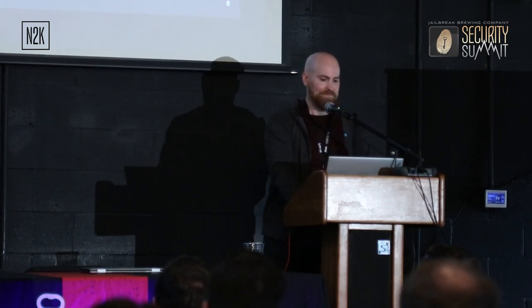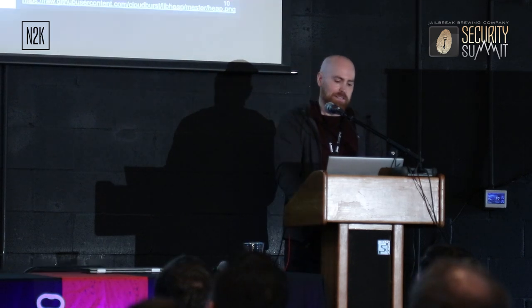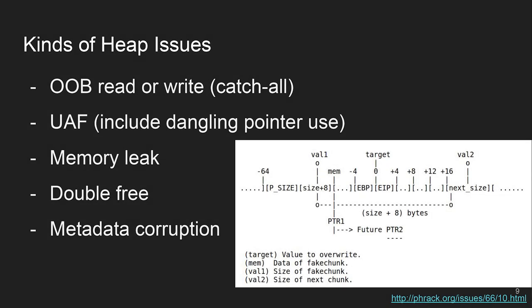It's not like, oh, I messed something up, but luckily the program crashed and I can see it and fix it. Usually it's like, something blew up because something bad happened a while ago. These are sort of the categories I use when thinking about heap issues: out-of-bounds read and write, which could be indexing too far or writing outside a block because of bad pointer math. Use-after-free is a general category too.